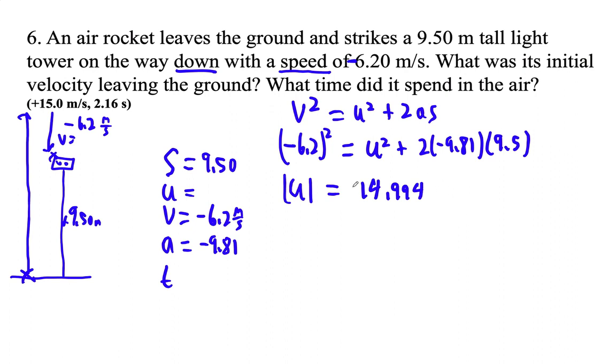So that's our initial velocity. And the question is, is it positive or negative? Well, they had to launch it upward, so we're going to choose the positive value. So now we know the initial velocity, 14.994. We know the final. We know the acceleration. Now we can find T with no S.